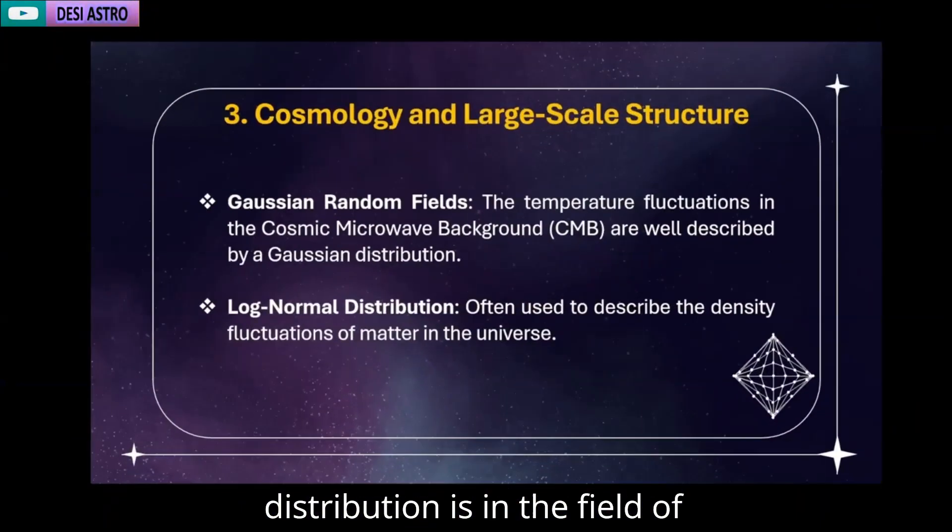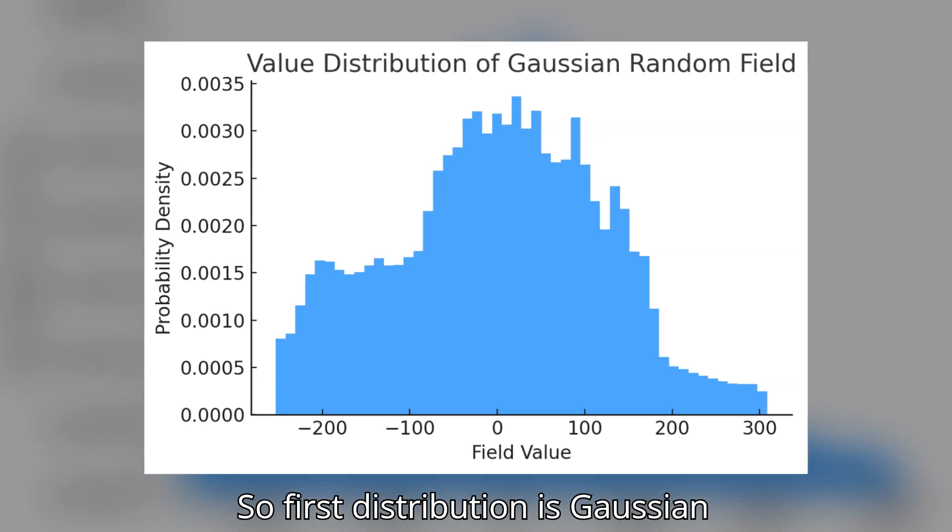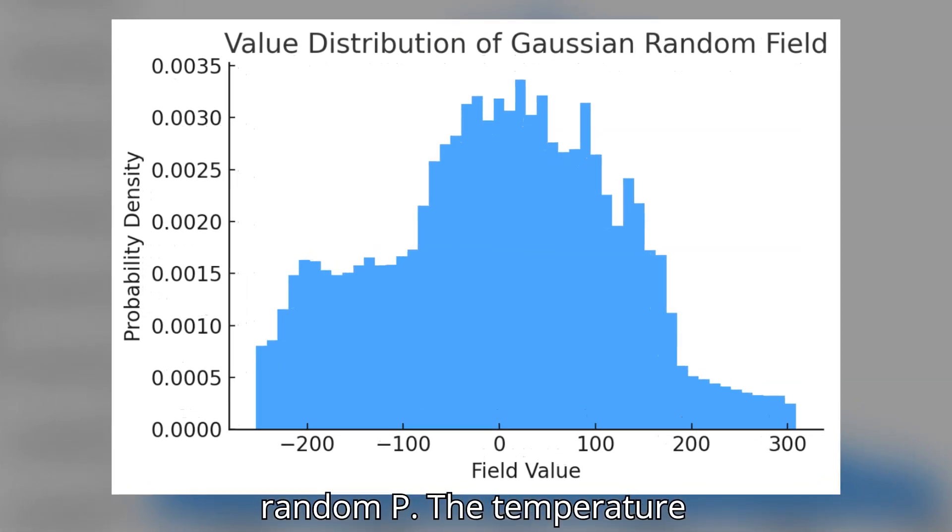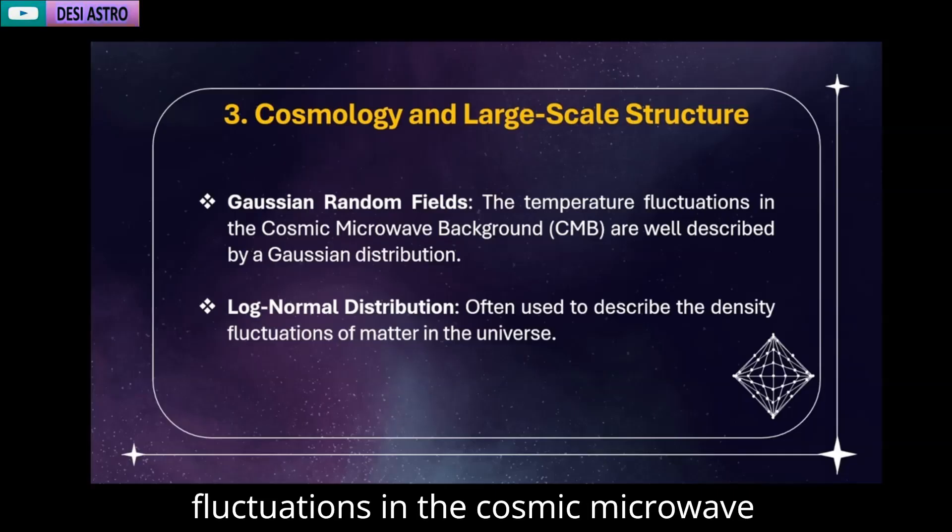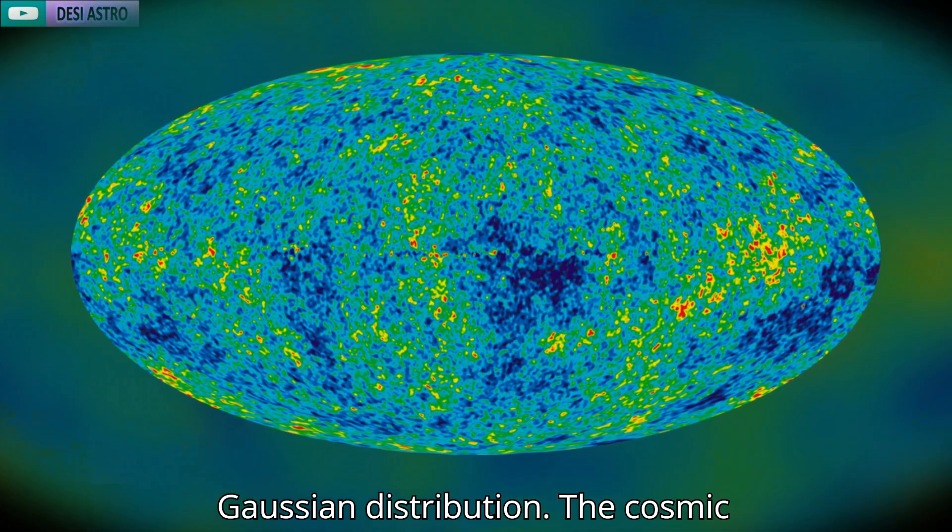Next distribution is in the field of cosmology and large scale structure. First distribution is Gaussian random field. The temperature fluctuations in the cosmic microwave background are well described by a Gaussian distribution.